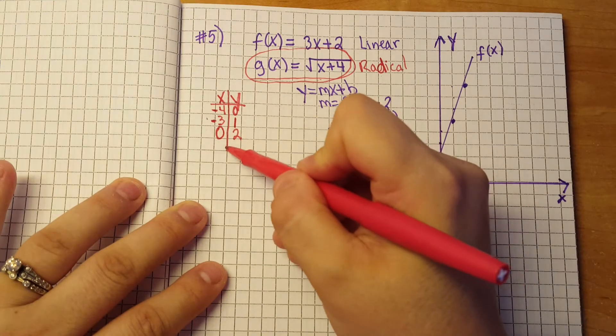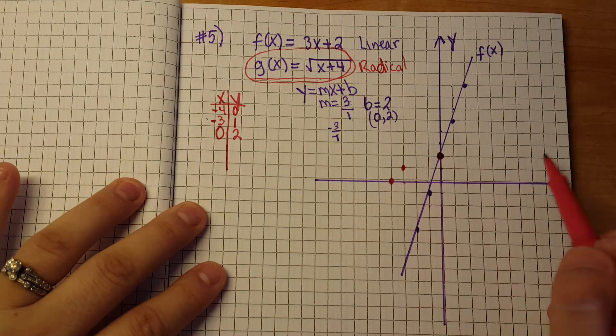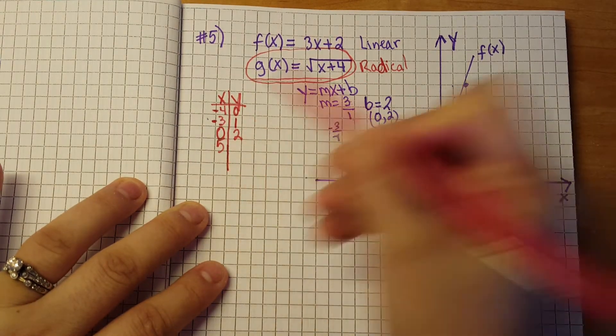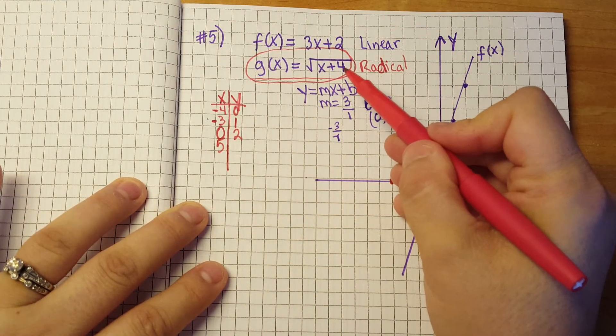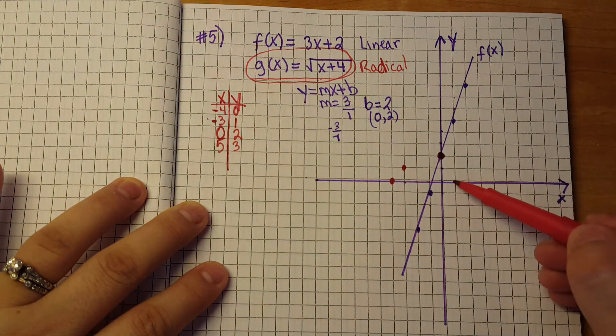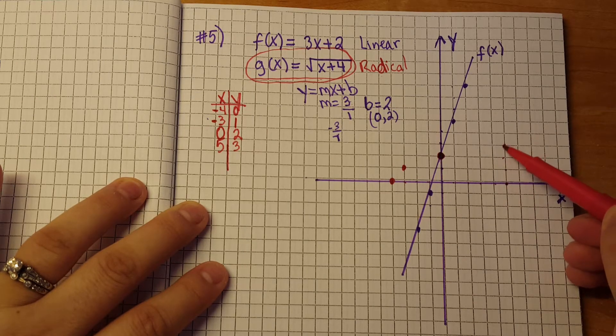And let's pick one more point just so that way we could see how far this goes out. So let's go with 5 because 5 plus 4 is 9 and the square root of 9 is 3, so we're going to go 5, so 1, 2, 3, 4, 5, up 3, 1, 2, 3.